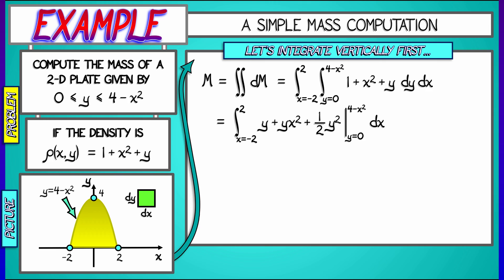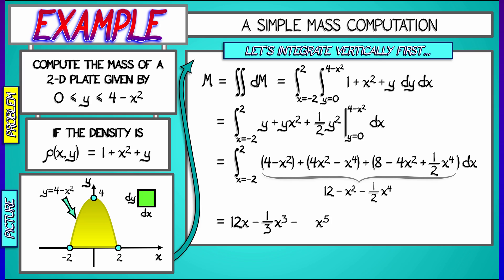So performing those evaluations gives us what? First, y evaluates to 4 minus x squared minus 0. Then y x squared evaluates to 4 x squared minus x to the fourth. Then y squared over 2 evaluates to 8 minus 4 x squared plus x to the fourth over 4. That simplifies to 12 minus x squared minus x to the fourth over 4. And now we integrate that as x goes from negative 2 to positive 2, giving us 12x minus x cubed over 3 minus x to the fifth over 10. Evaluating that from negative 2 to positive 2 gives us an answer of 544 over 15, as you can check.